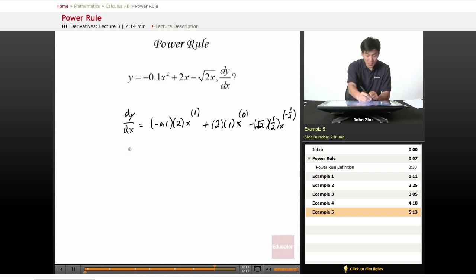So to simplify everything, we get negative 0.2x plus 2 times x to the 0, which is 1. So 2 times 1 is 2.